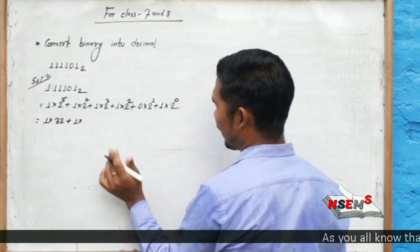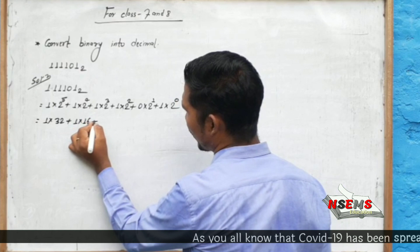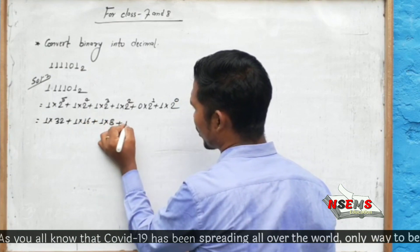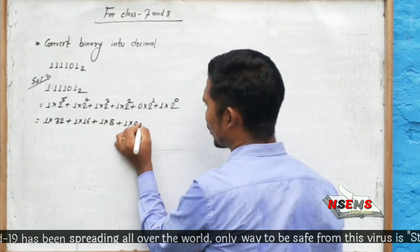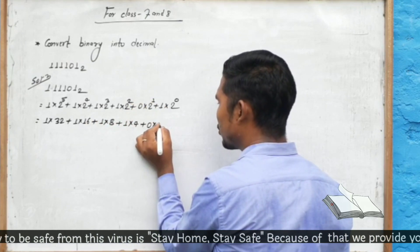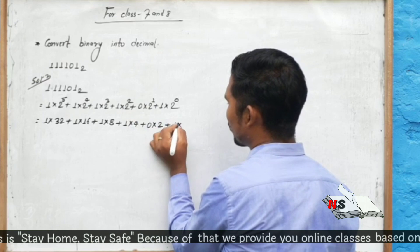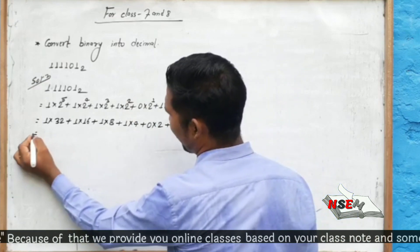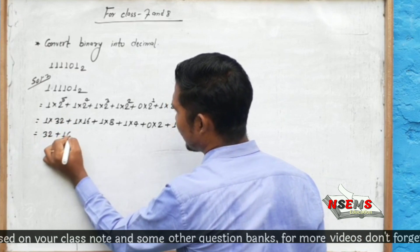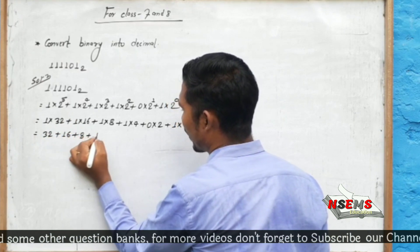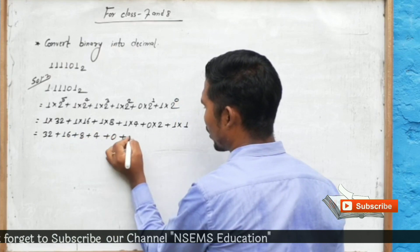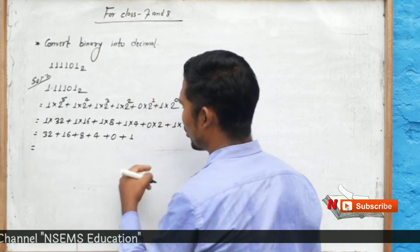Two power four equals sixteen. So: one times thirty-two plus one times sixteen plus one times eight plus one times four plus zero times two plus one times one. That gives thirty-two plus sixteen plus eight plus four plus zero plus one.